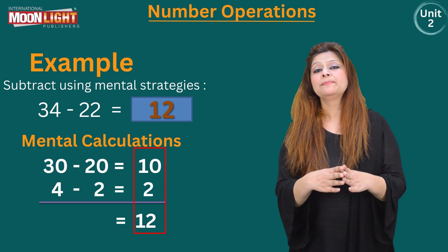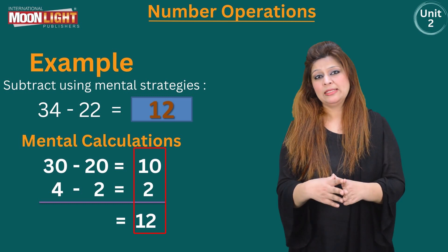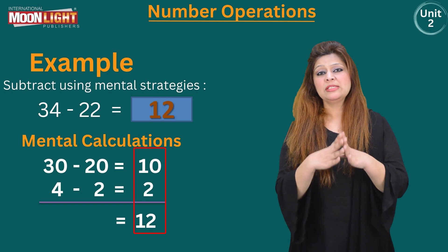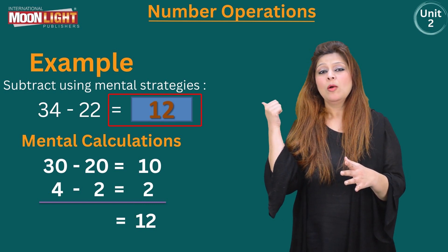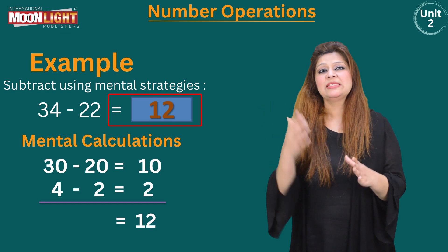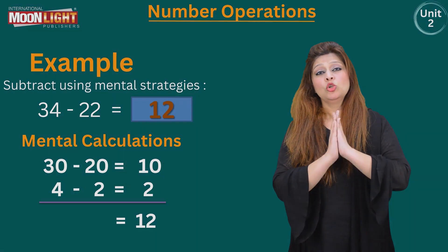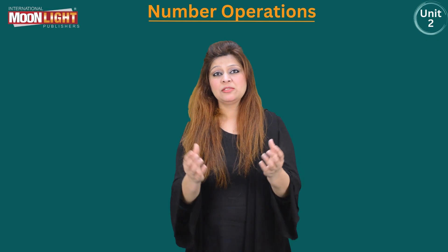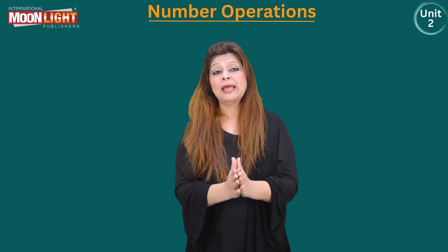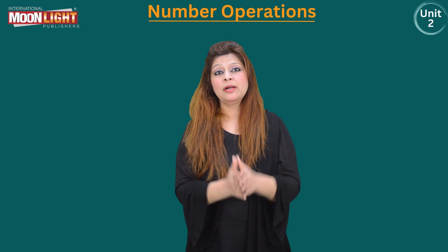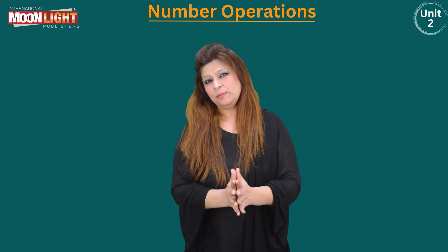10 plus 2 is 12, so this is the final answer. I will write this number in the empty box — 12 is the final answer, obtained not by any other method but purely by mental calculation strategies, by decomposing the numbers into tens and ones.